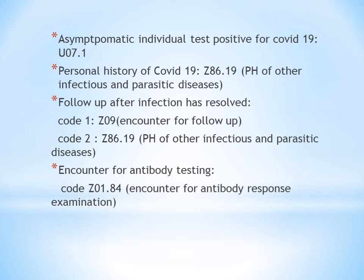Asymptomatic means without symptoms. If a COVID-19 patient is confirmed positive but has no symptoms — that is, asymptomatic — COVID-19 positive is still confirmed. We still code the same: COVID-19 positive confirmed using U07.1.